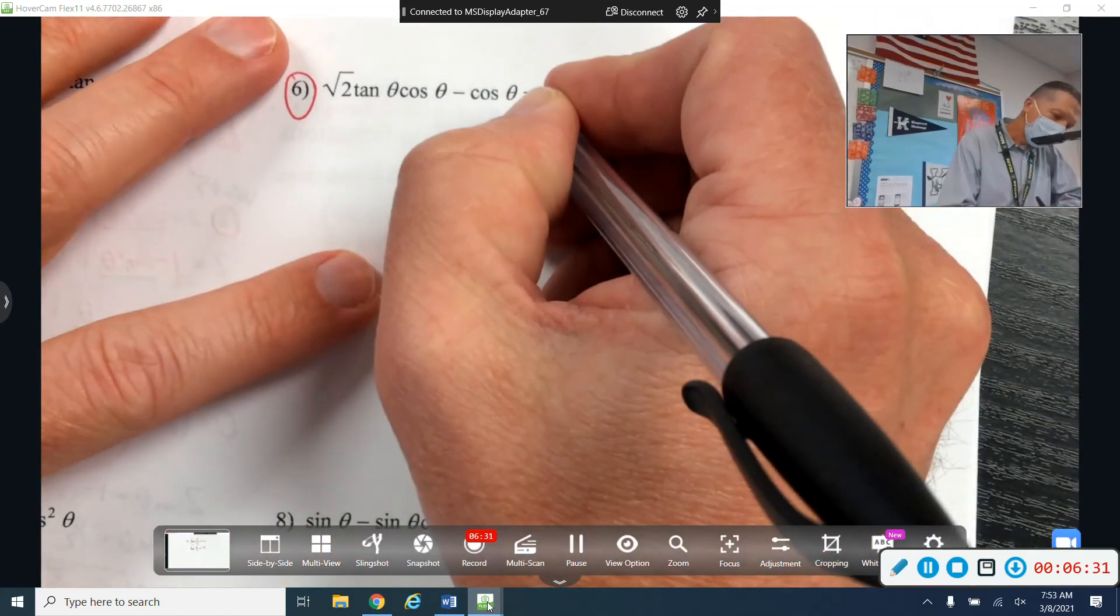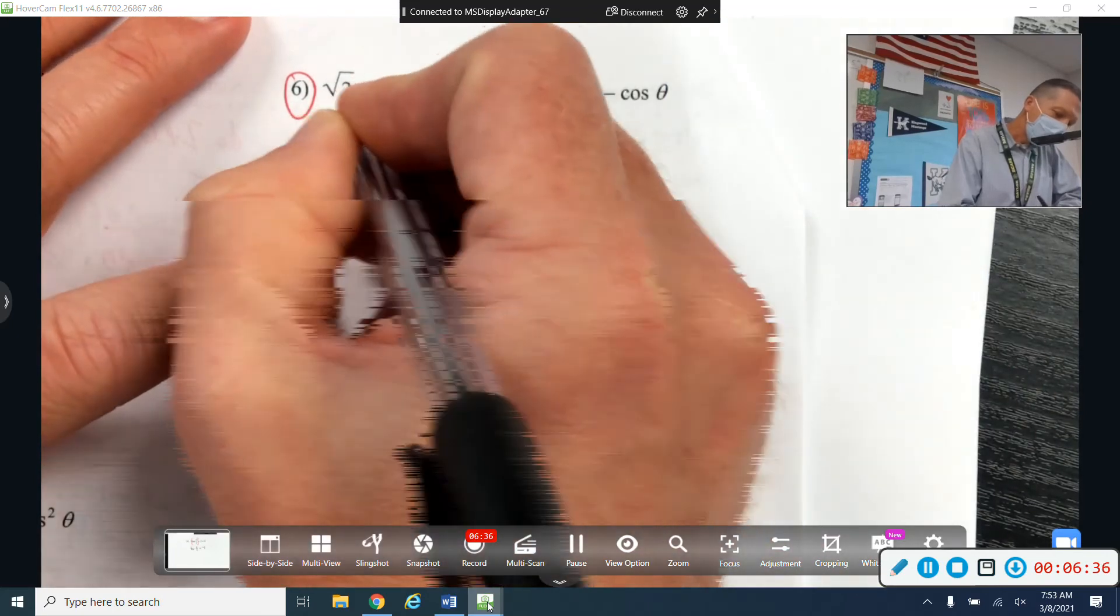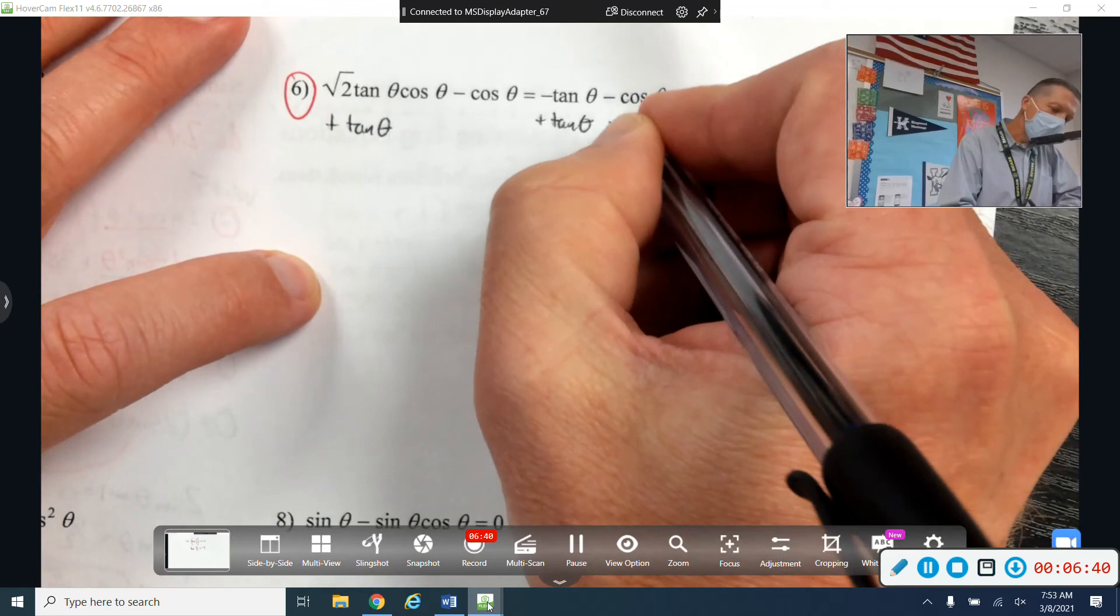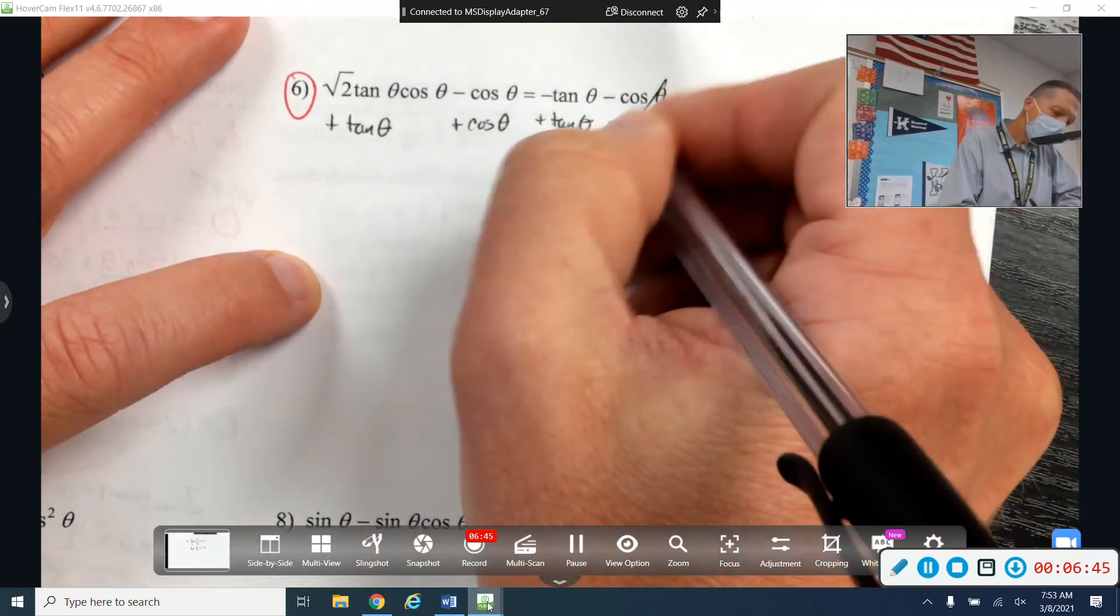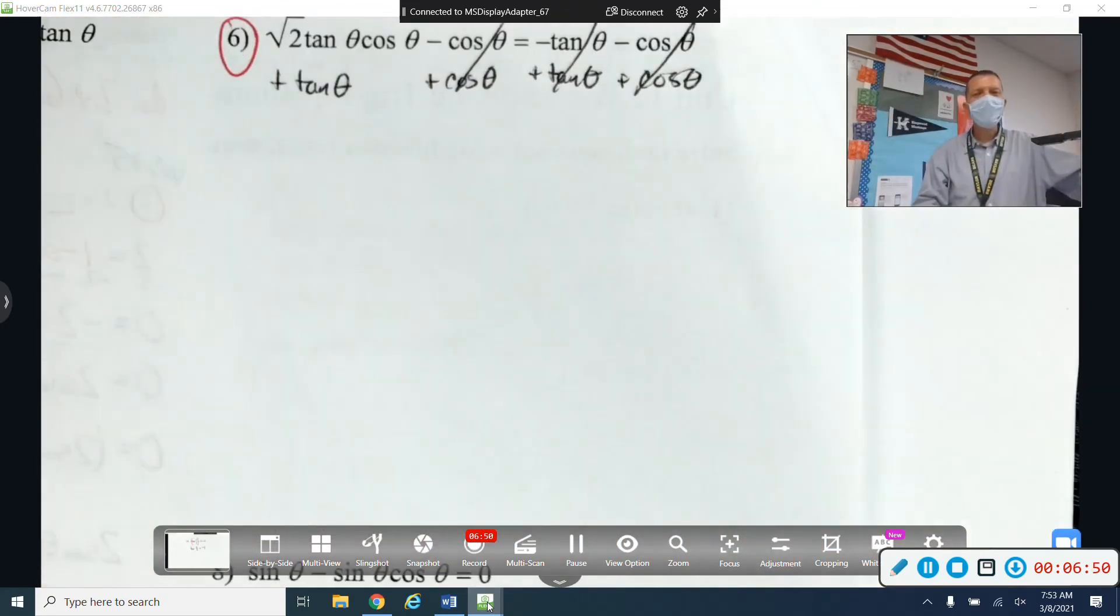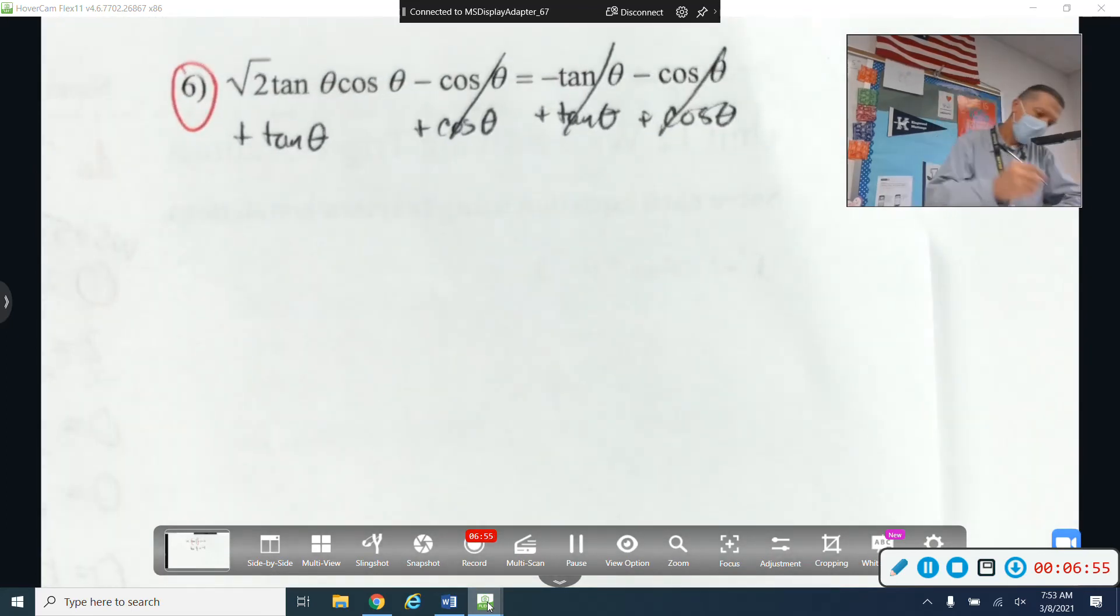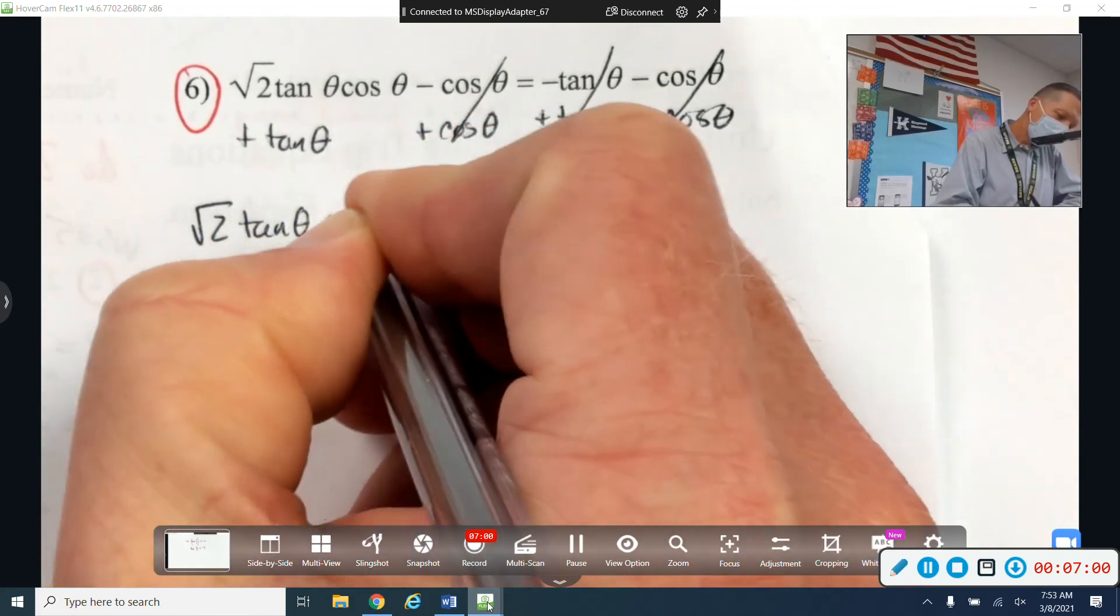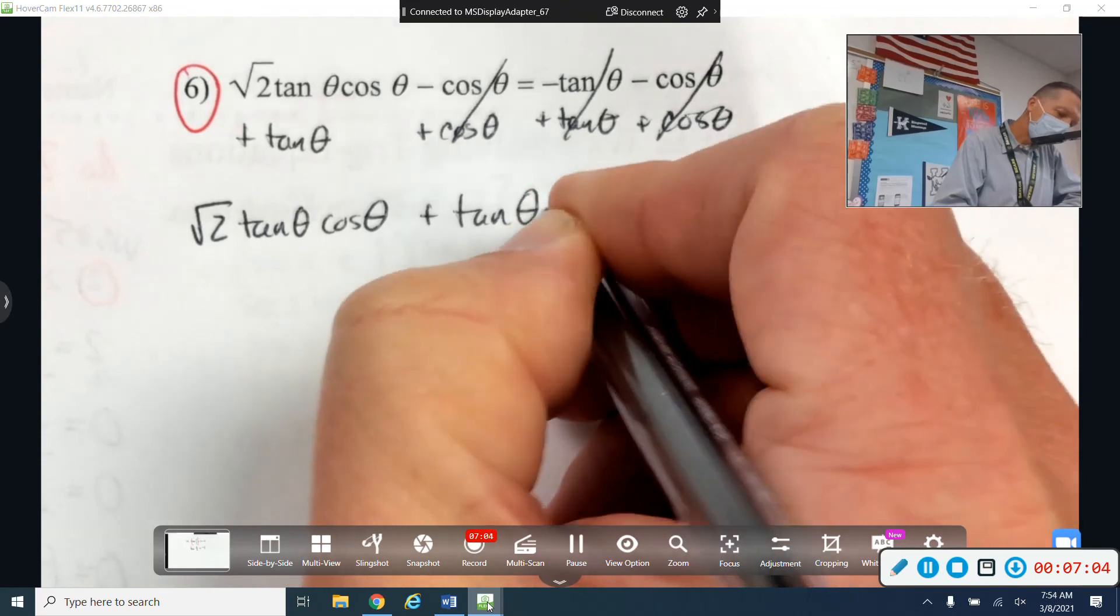But let's move everything to one side and see what happens. So I need to move the tangent over. It doesn't really have anybody to add to on the other side. What happens when I move the cosine over? It cancels out. So they just threw an extra piece in there that just kind of muddied up the problem but didn't really add anything to it. So root 2 tangent theta cosine theta plus tangent theta equals zero.